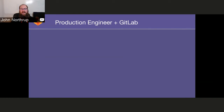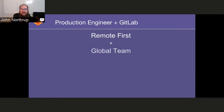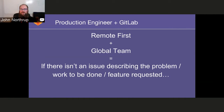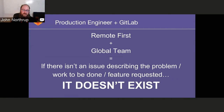How do we do this with GitLab? A really key point: we're a remote-first company with a global team. What that really means is: if there isn't an issue describing the problem, the work to be done, or the feature requested, it doesn't exist. That's one of the key features we find most helpful about using GitLab as a production engineering team — issues are the lifeblood by which we do our job.